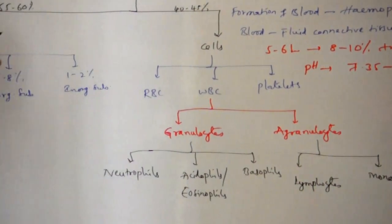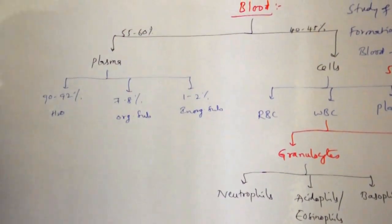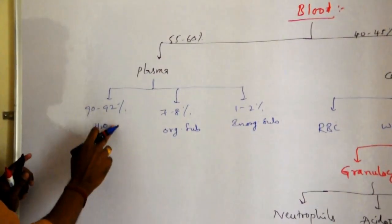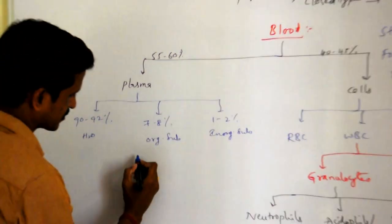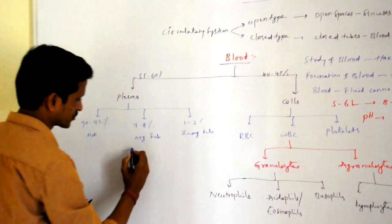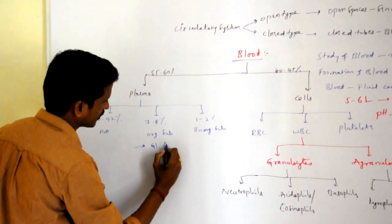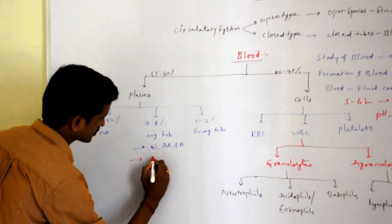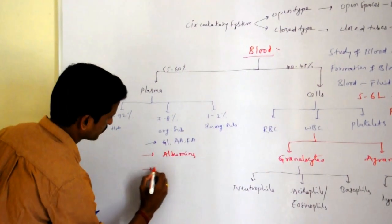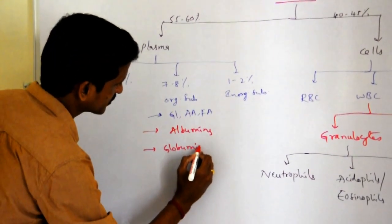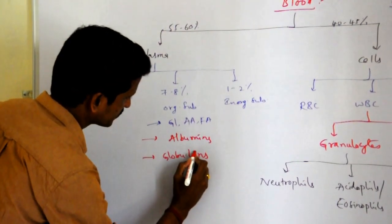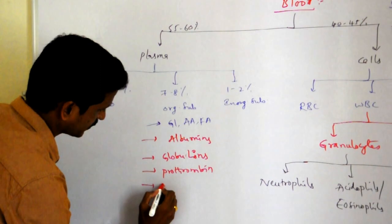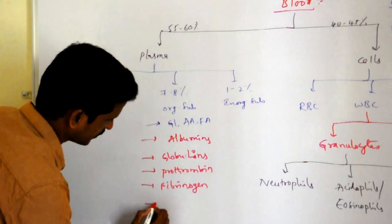Blood possesses 55 to 60 percent plasma, of which the major part is water — 90 to 92 percent. About 7 to 8 percent includes organic substances such as glucose, amino acids, and fatty acids. Some proteins are also present: albumins, globulins, prothrombin, fibrinogen, and heparin.